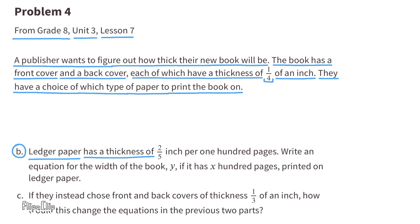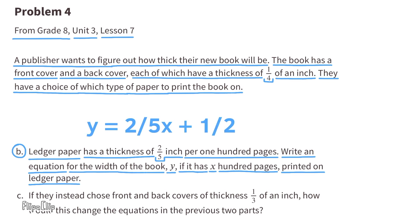Part B: Ledger paper has a thickness of 2/5 of an inch per 100 pages. Write an equation for the width of the book y if it has x hundred pages printed on ledger paper. The thickness of the front and back covers combined is still 1/2 inch, so the only term that changes is the one multiplied by x. Instead of 1/4 x, we'll have 2/5 x: y equals 2/5 x plus 1/2.